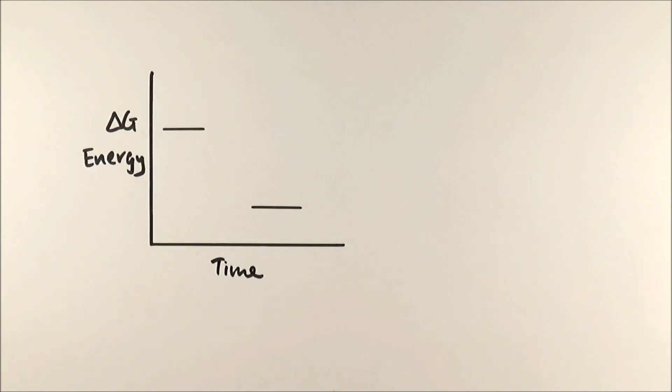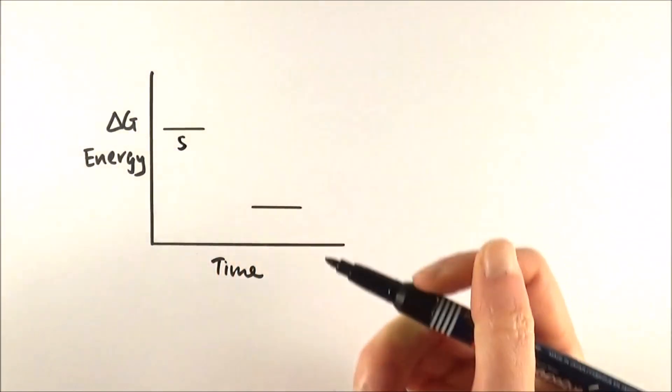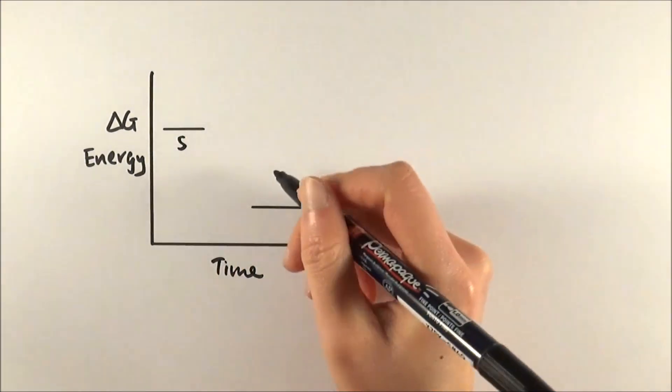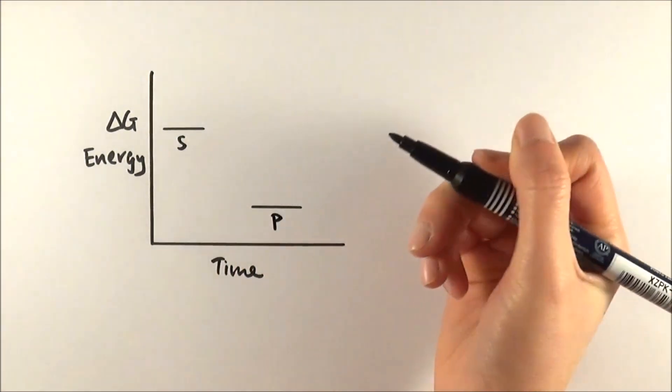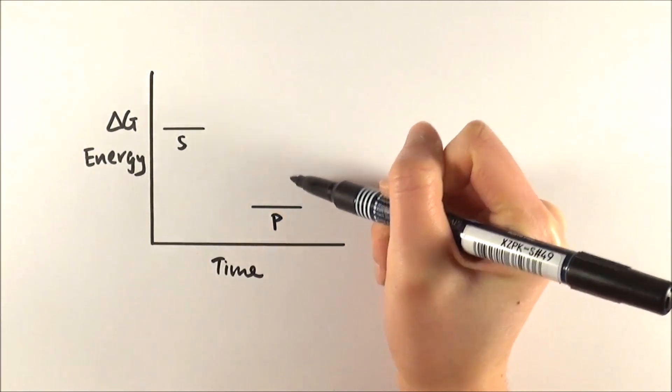However, we can't just normally wait for them to be naturally broken down because they have to overcome a very big activation energy in order to do that. So it's going to take forever. If we have our substrate, which is the starch here, and our product, which is the glucose molecules here, they have to overcome a very large amount of energy in order to be broken down.